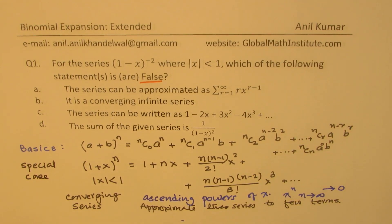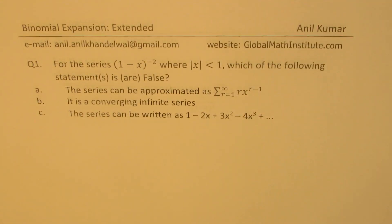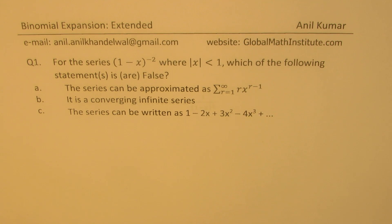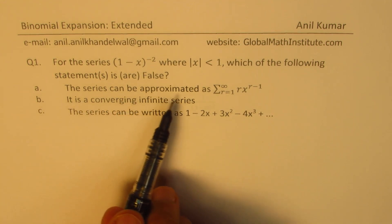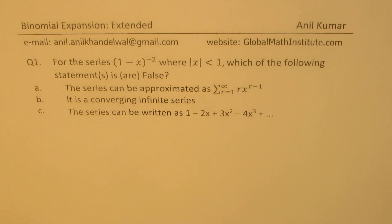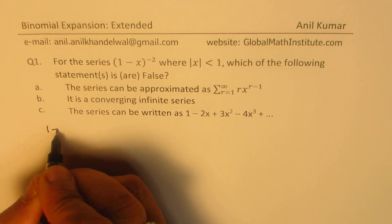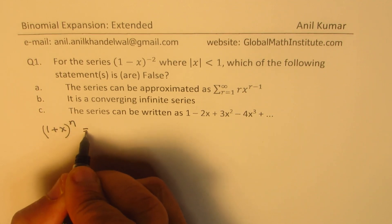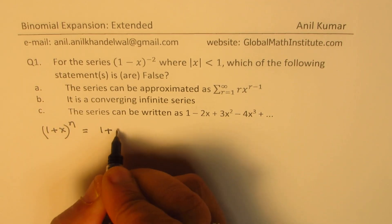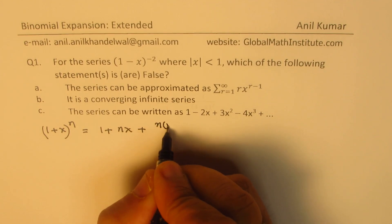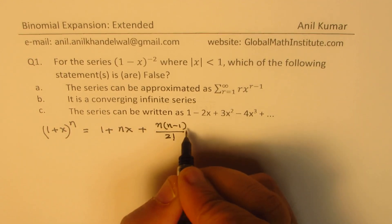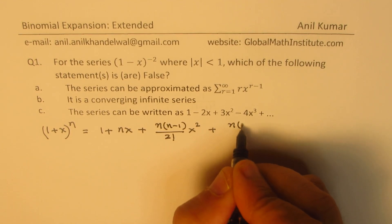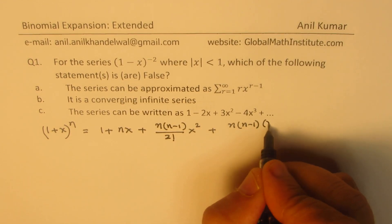Now, with that background, let's begin to solve these questions one by one. Part A: The series can be approximated as r·x^(r-1) where r is from 1 to infinity. We just learned that (1 + x)^n can be written as 1 + nx + n(n-1)/2!·x² + and so on.